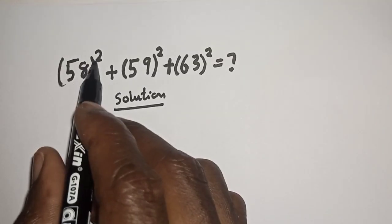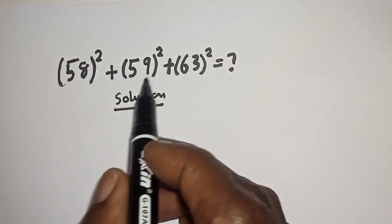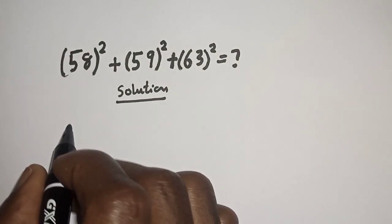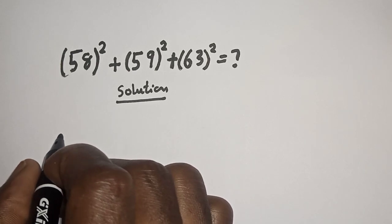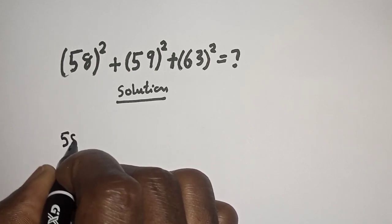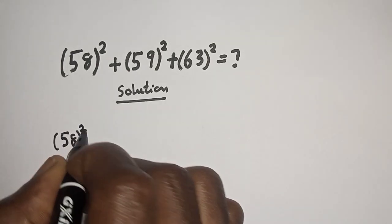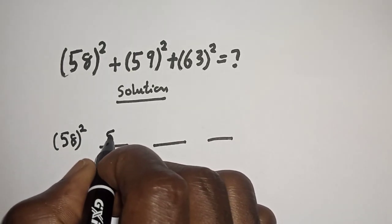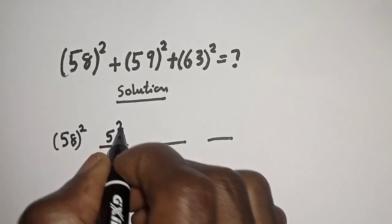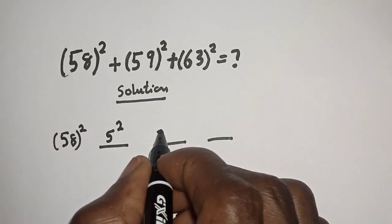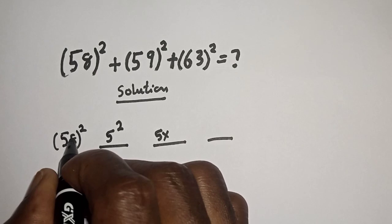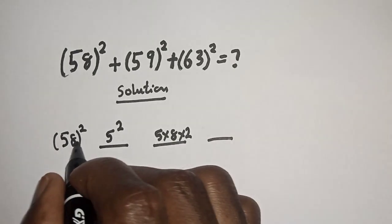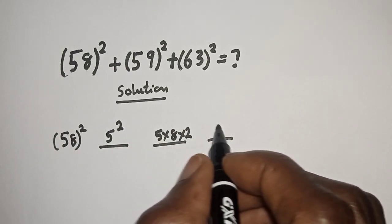The first one here is 58 square. We quickly want to do this in an easiest way. Let's perform the trick. We have 5 square here, multiply by this 8 multiply by 2, and the last one is 8 square.